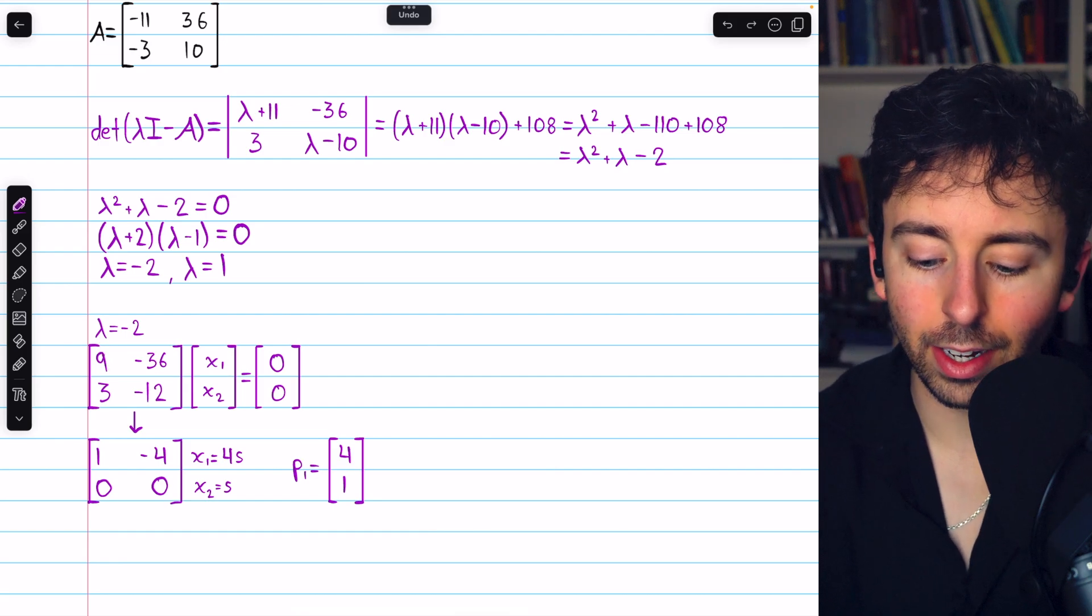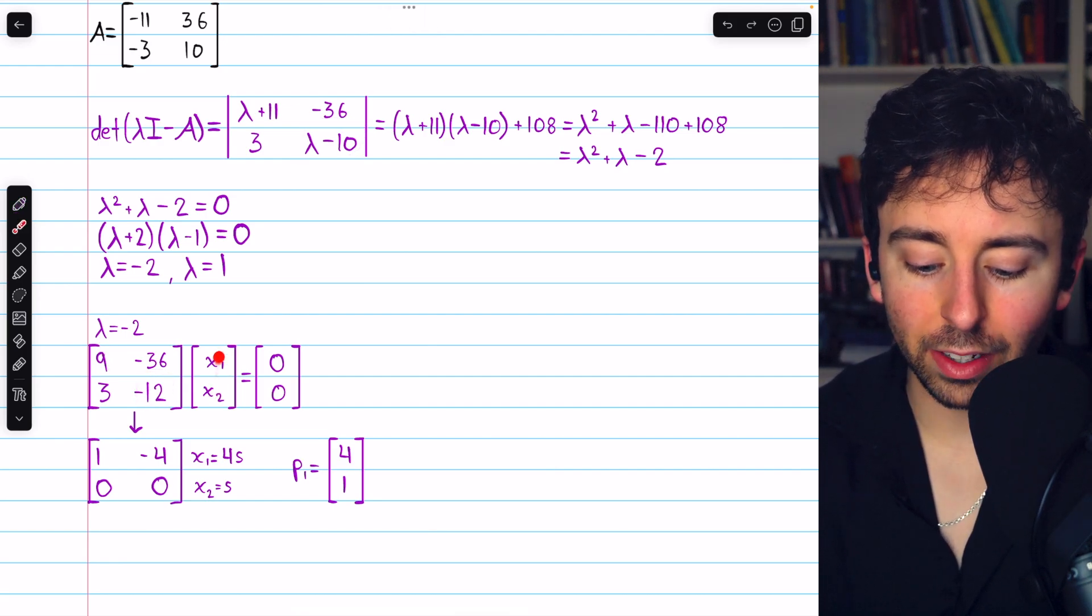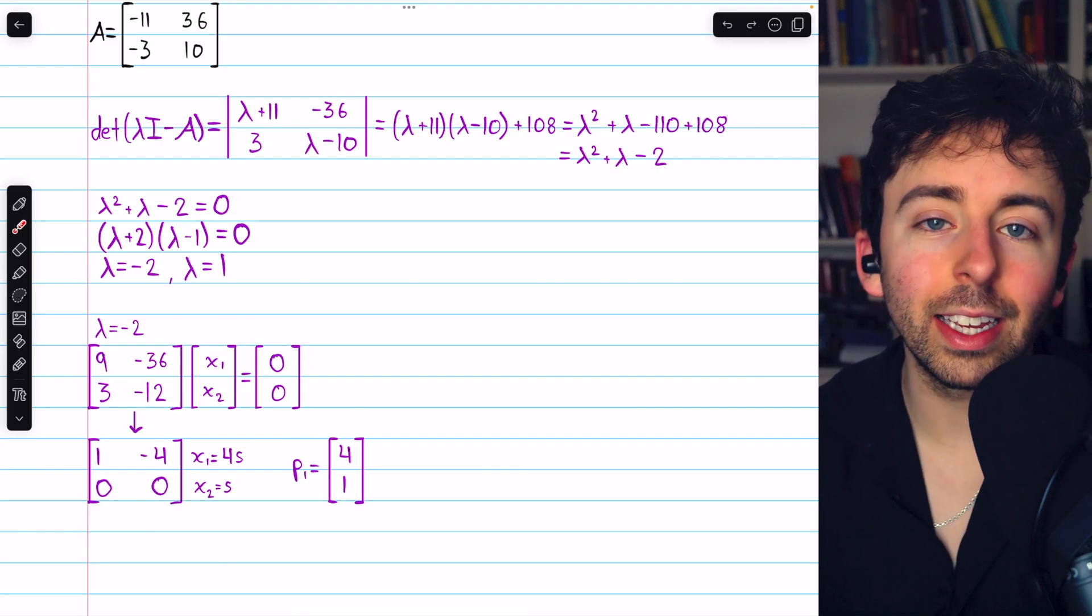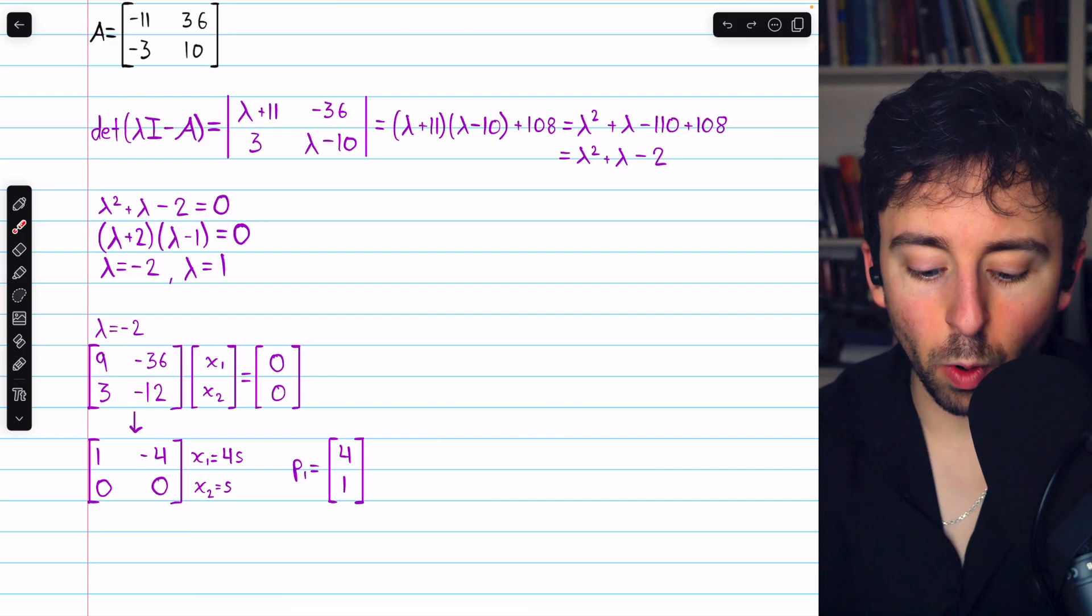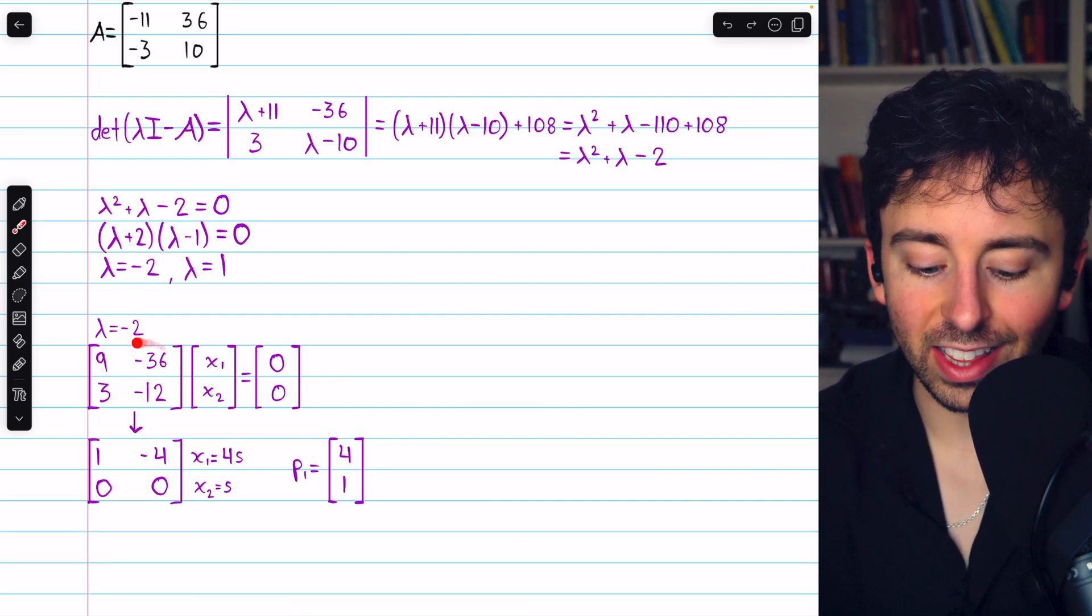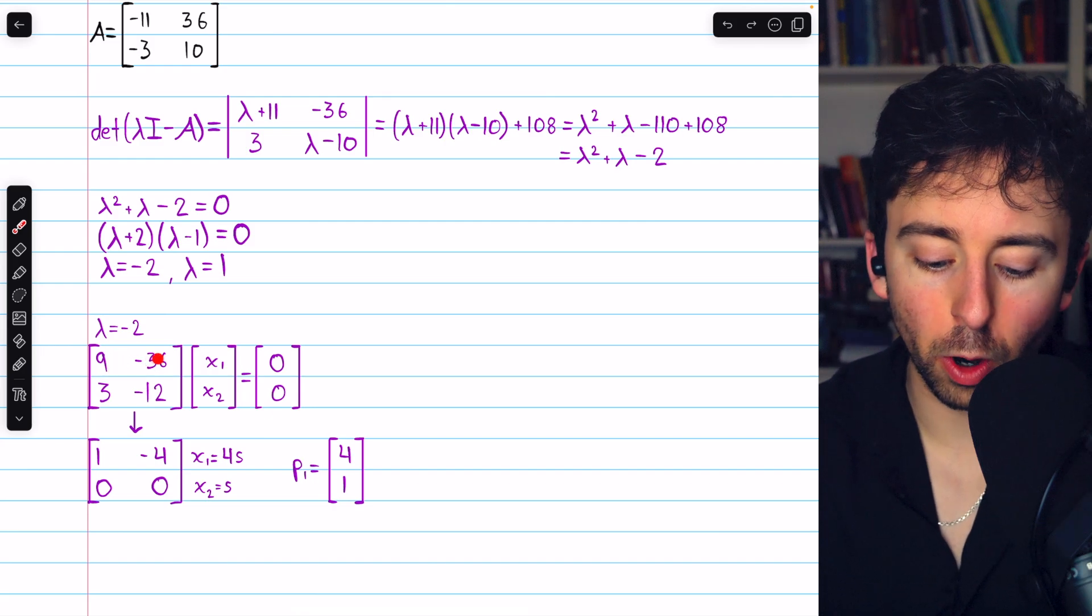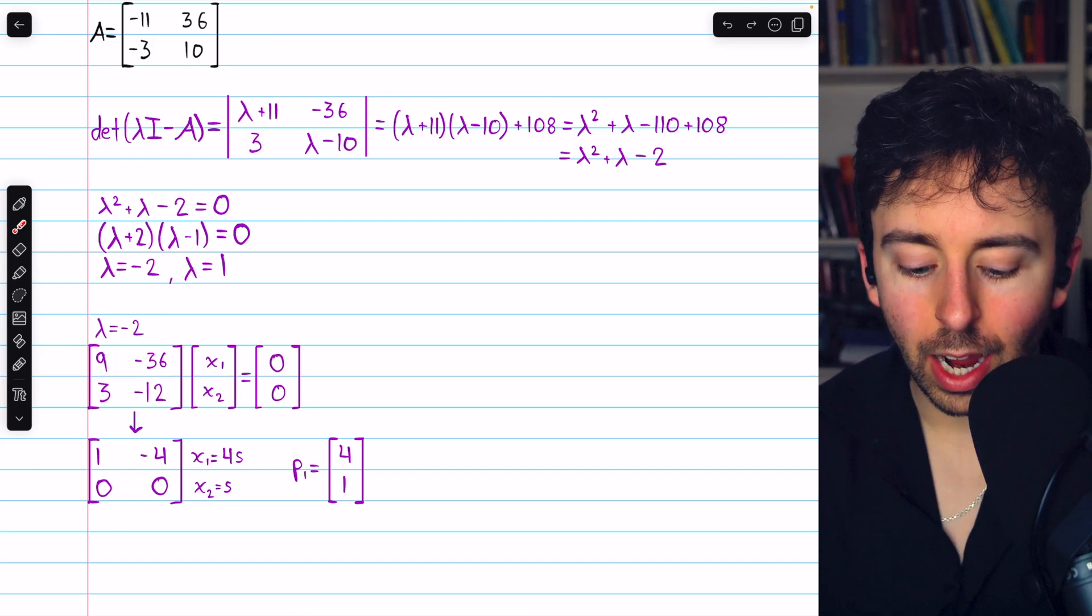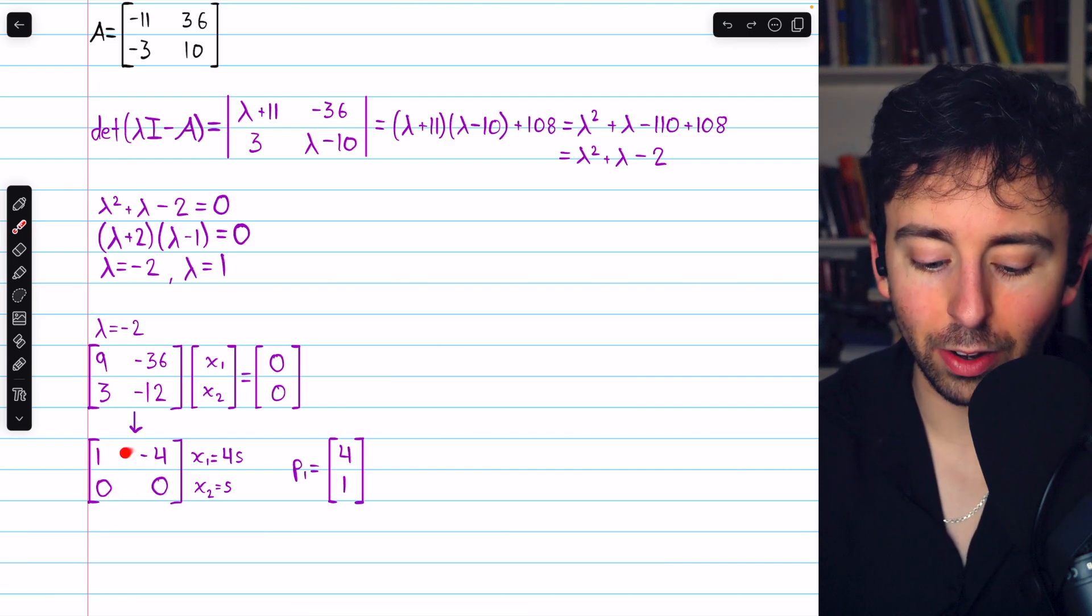-2 + 11 is 9, and -2 - 10 is -12. Any non-zero vector satisfying this equation is an eigenvector, so we have to solve this system. We can perform Gauss-Jordan elimination on this matrix. All we have to do is subtract 1/3 row 1 from row 2, and then divide row 1 by 9.